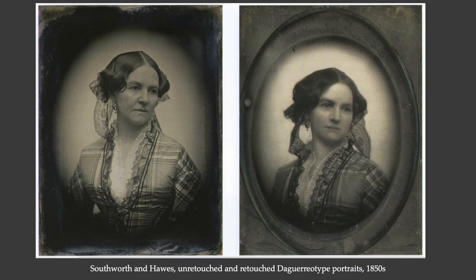When it came time to make daguerreotypes as portraits, people commissioning daguerreotypes of themselves wanted them to be as flattering as possible. Daguerreotypists would use their best skill to light things properly and angle things in flattering ways. But the daguerreotype records every little wrinkle and every stray hair, so they would retouch those daguerreotypes to look as flattering as possible. If you look at the one on the right, you can see the detail has been softened by very careful brushwork, and they would sometimes add a little pink color to the cheeks to make it look warmer. From the very beginnings of photography, people were using available tools to enhance what the camera captured.